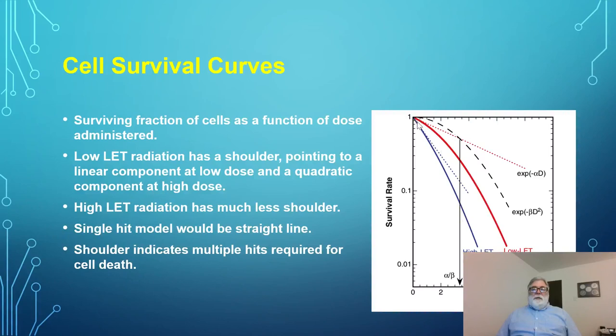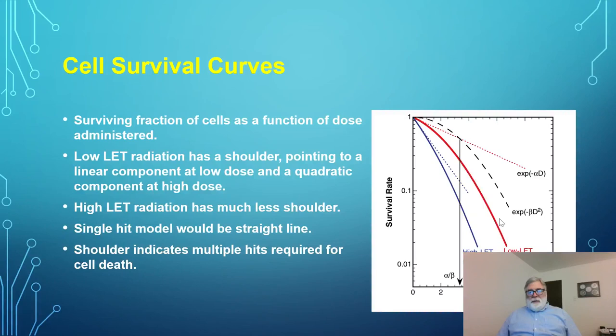Notice that low-LET radiation has a shoulder on the survival curve, while high-LET does not have a prominent shoulder. The shoulder is characteristic of whether one hit or two hits are needed to cause the injury. At lower doses, single hits take place and cause less damage per unit dose, producing the shoulder. At higher doses, the total ionization is greater, so double hits are more likely, and the curve becomes more linear — an asymptotic function.